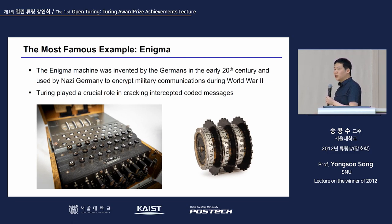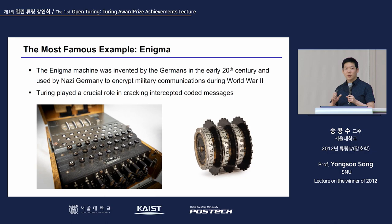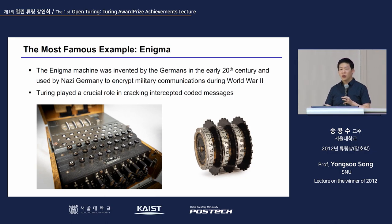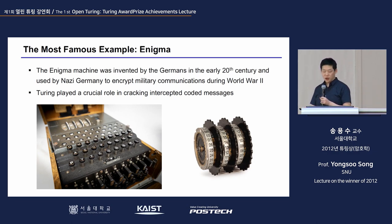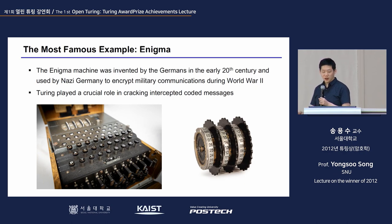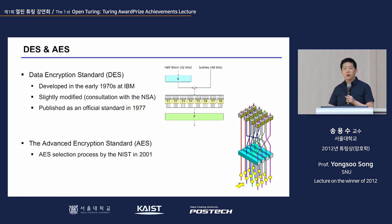You can see in the photo what Enigma looks like — there are many pulleys, and every time you press a key, the machine would move and produce a different encrypted text. Of course, this was also broken by Turing, as you already know.